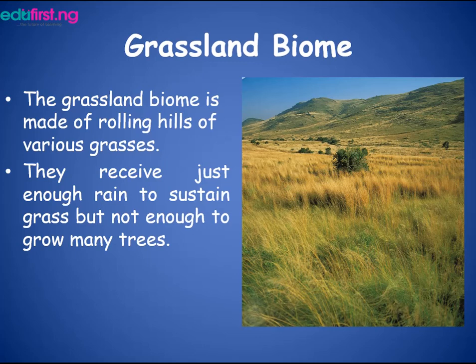Compared to the forest biome, the grassland biome doesn't have tall trees — even if there are trees, they are usually very few. A major characteristic is the presence of grasses that are almost of equal height.